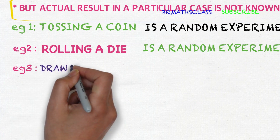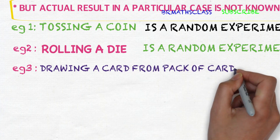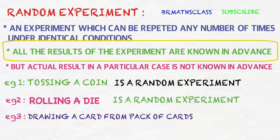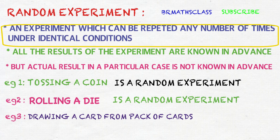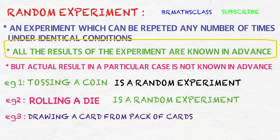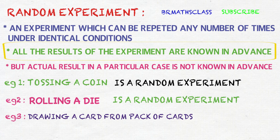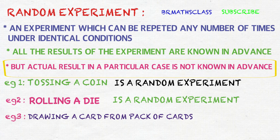Third example: drawing a card from a pack of cards. First condition: we can draw a card from a pack of cards as many times as we want under identical conditions. Second condition: if we draw a card from a pack of 52 cards, we know what it is going to be — it is going to be any one of those 52 cards. Third condition: the actual result in a particular case is not known in advance — suppose I am going to draw a card, what it comes exactly, I don't know. So drawing a card from a pack of cards satisfies all three conditions. Therefore, drawing a card from a pack of cards is a random experiment.